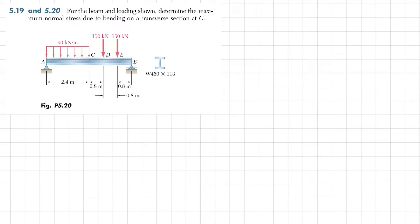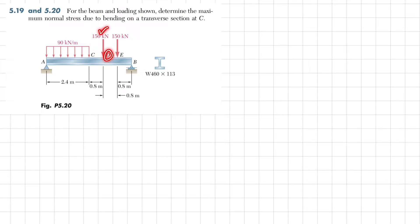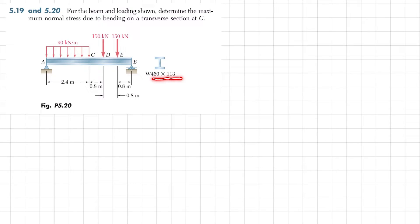Welcome back. Problem 5.20: for the beam and loading shown, determine the maximum normal stress due to bending on a transverse section at C. This is a simply supported beam A-B. From A to C there is a uniformly distributed load of 90 kN/m. At point D we have a point load of 150 kN, and at point E we have a point load of 150 kN. We have been asked to find the maximum normal stress at the transverse section of the beam.